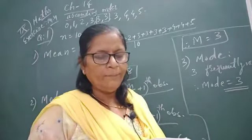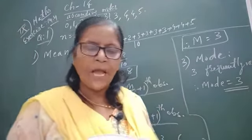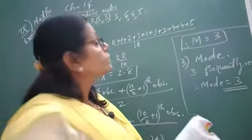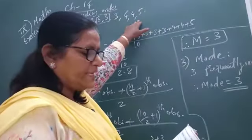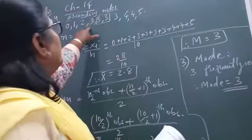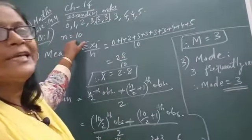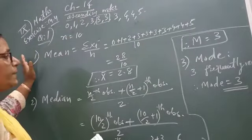Find the mean, median, and mode of these scores. Now first of all we write down all the observations in ascending order, and the number of observations n is equal to 10. Now first we find the mean.